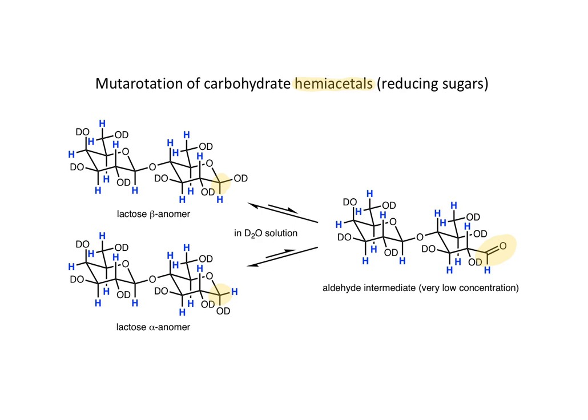The aldehyde intermediate is inferred by its reaction chemistry. In fact, these are often known as reducing sugars because hydrogenation and other reducing conditions will convert the aldehyde into a primary alcohol. But in the equilibrium, the aldehyde is present in such a low concentration that it is not observable by NMR spectroscopy.